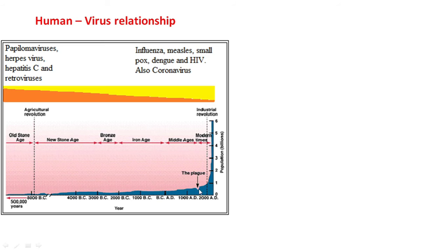Later on, when the human population had a boom, from agricultural lifestyle to industrial lifestyle, and the population had an explosion, then viruses like influenza, measles, smallpox, dengue, HIV, and coronavirus became predominant.